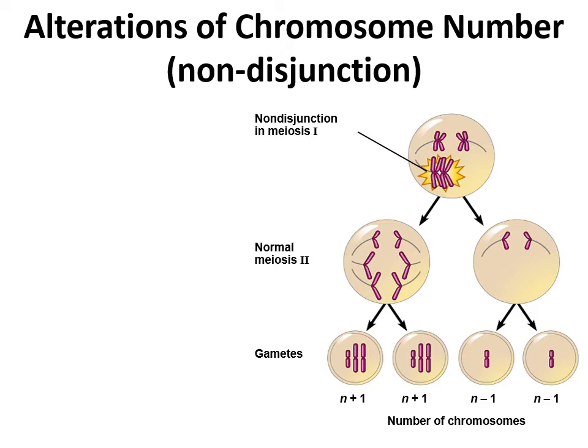When there is an alteration in chromosome number, it can happen through what's called a non-disjunction event. Essentially, during the process of meiosis, what was supposed to happen with the chromosomes in terms of them separating during anaphase doesn't happen the way it normally does.